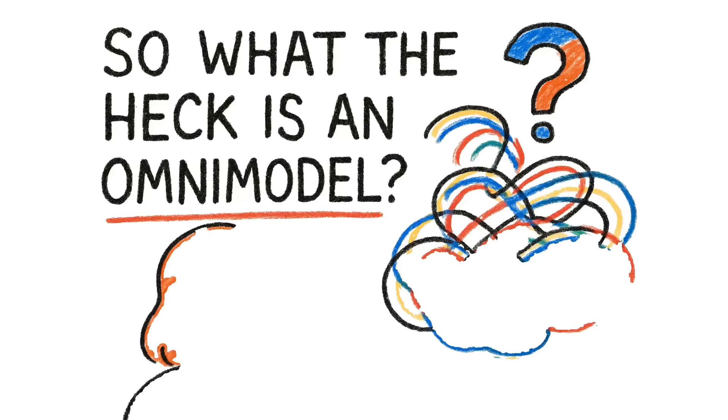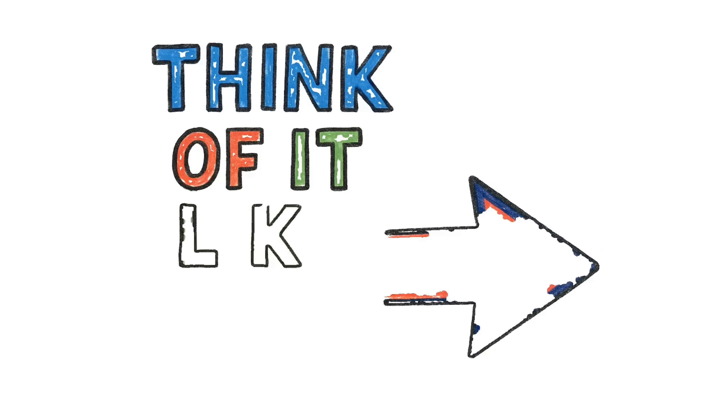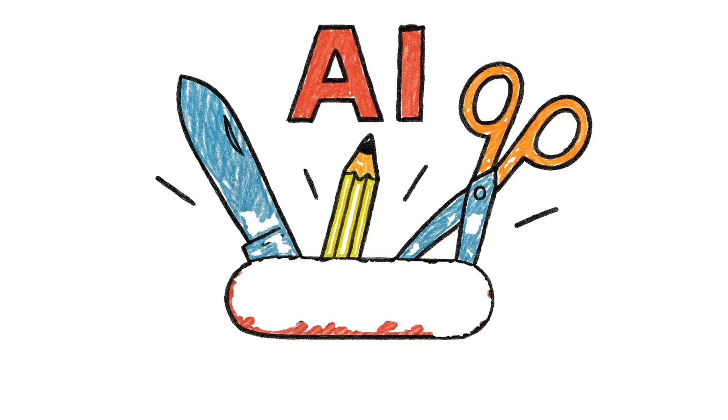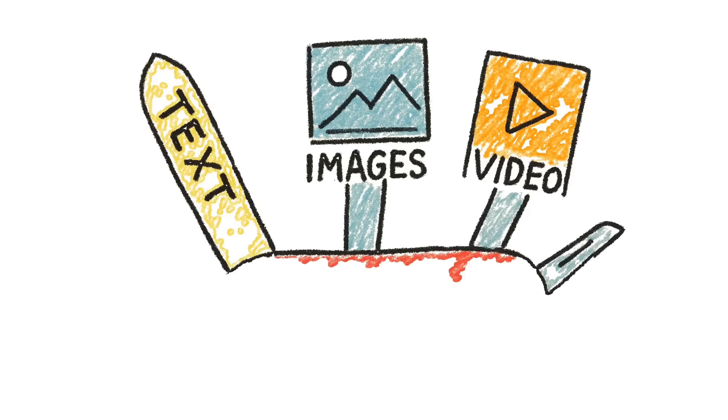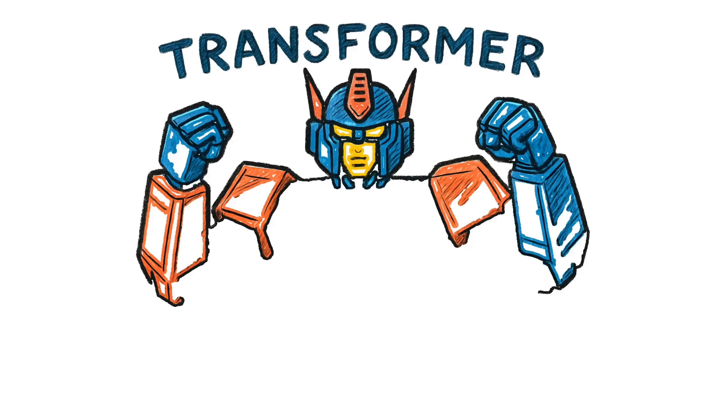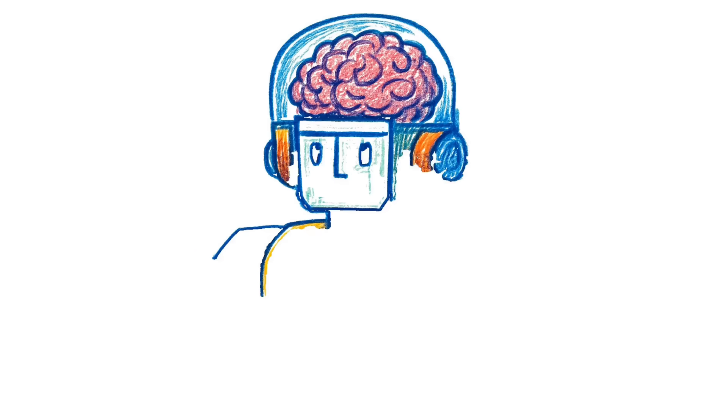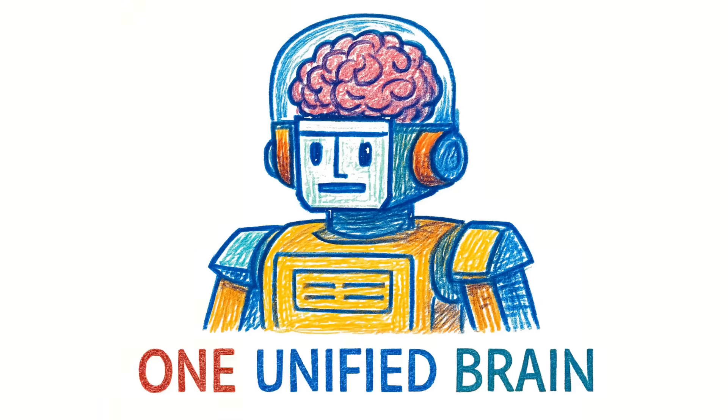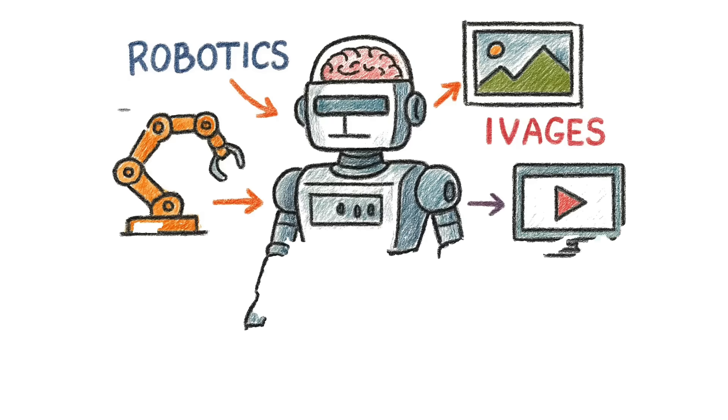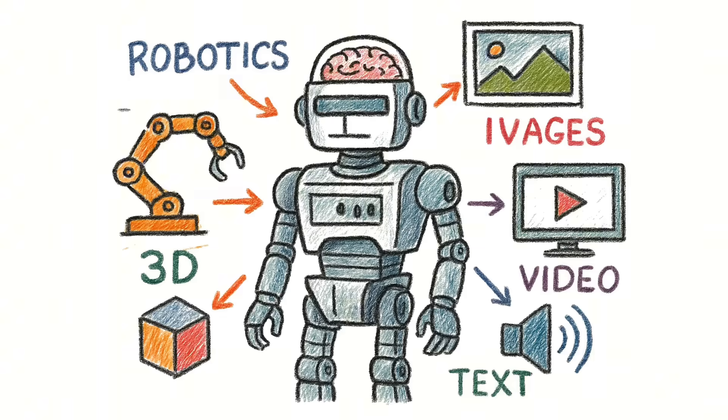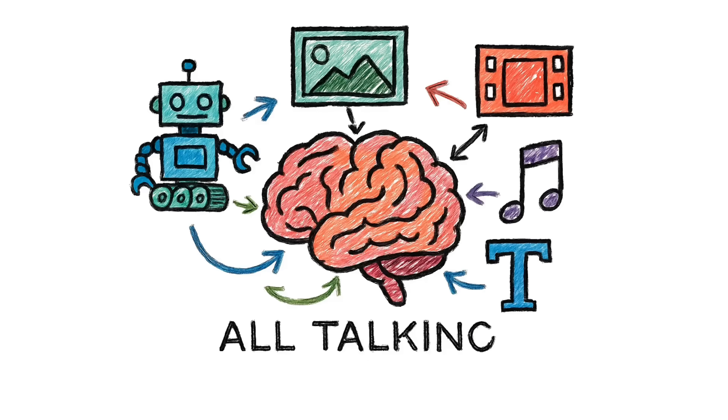So what the heck is an omni-model? Think of it like this. Right now, most AI is like a Swiss army knife. You've got a tool for text, a tool for images, a tool for video, all separate blades. Hassabis says by 2026, Google's Gemini will be more like a transformer robot, one unified brain that handles everything: robotics, images, video, audio, 3D, and text, all at once, all talking to each other.